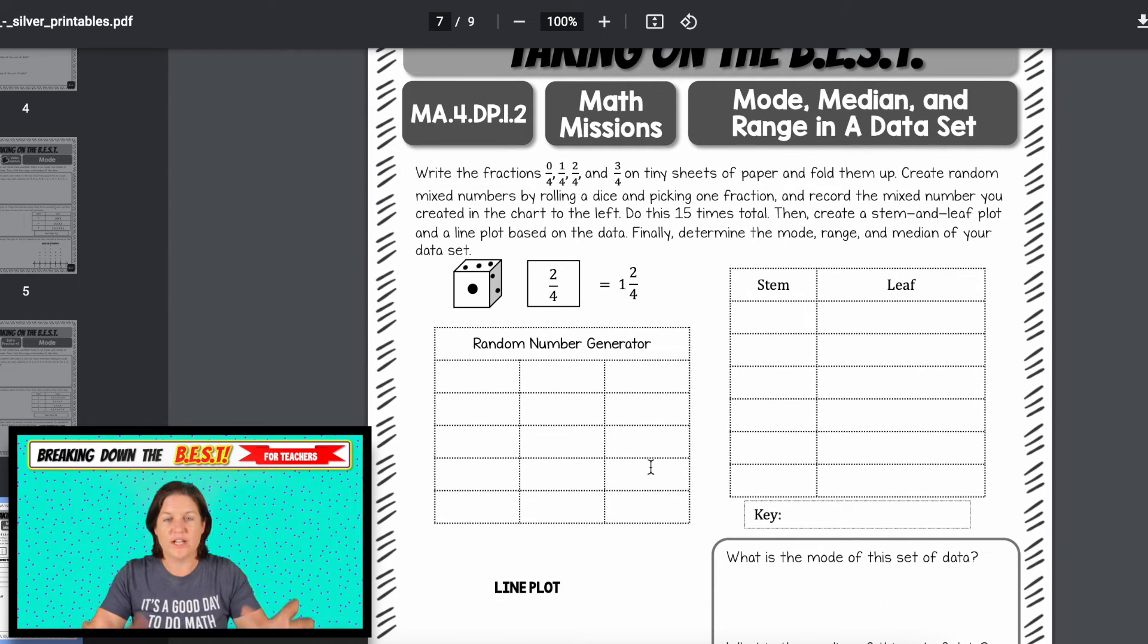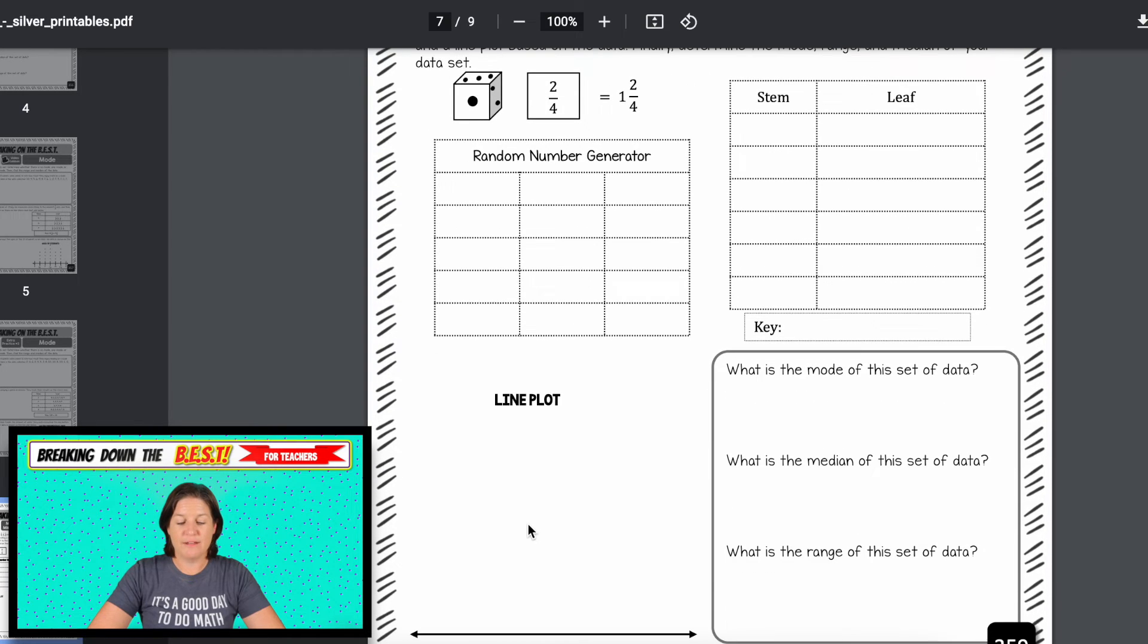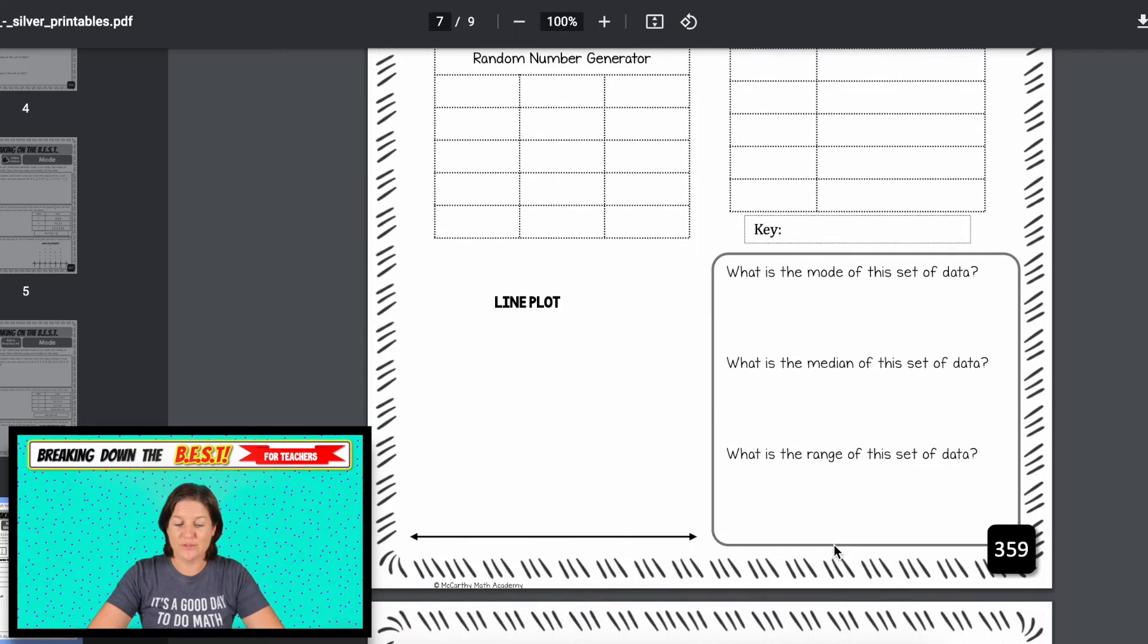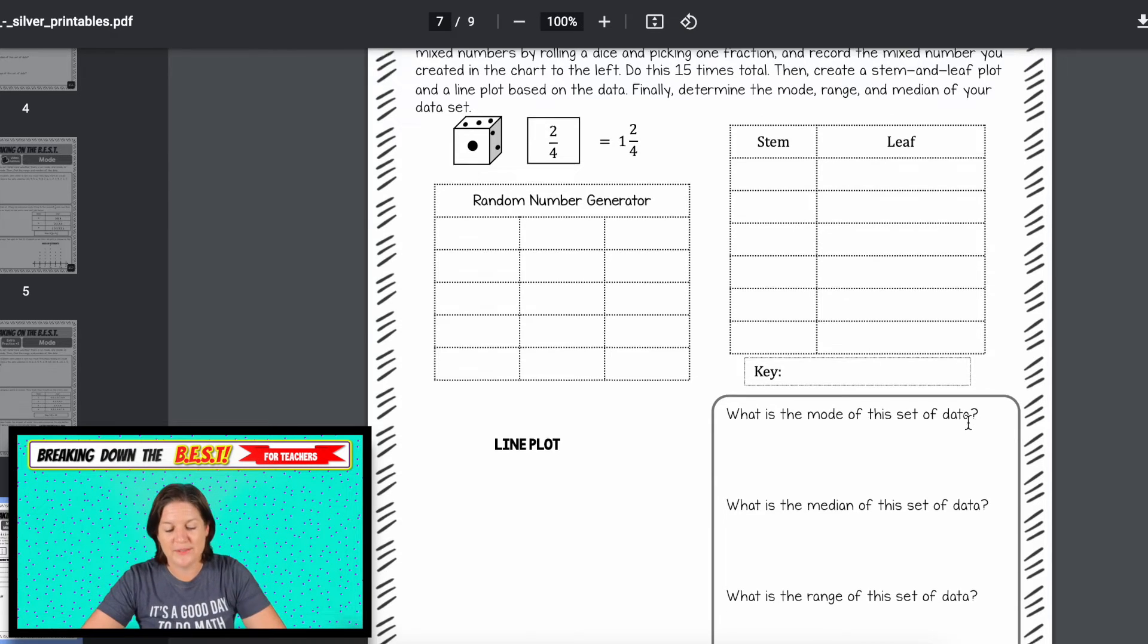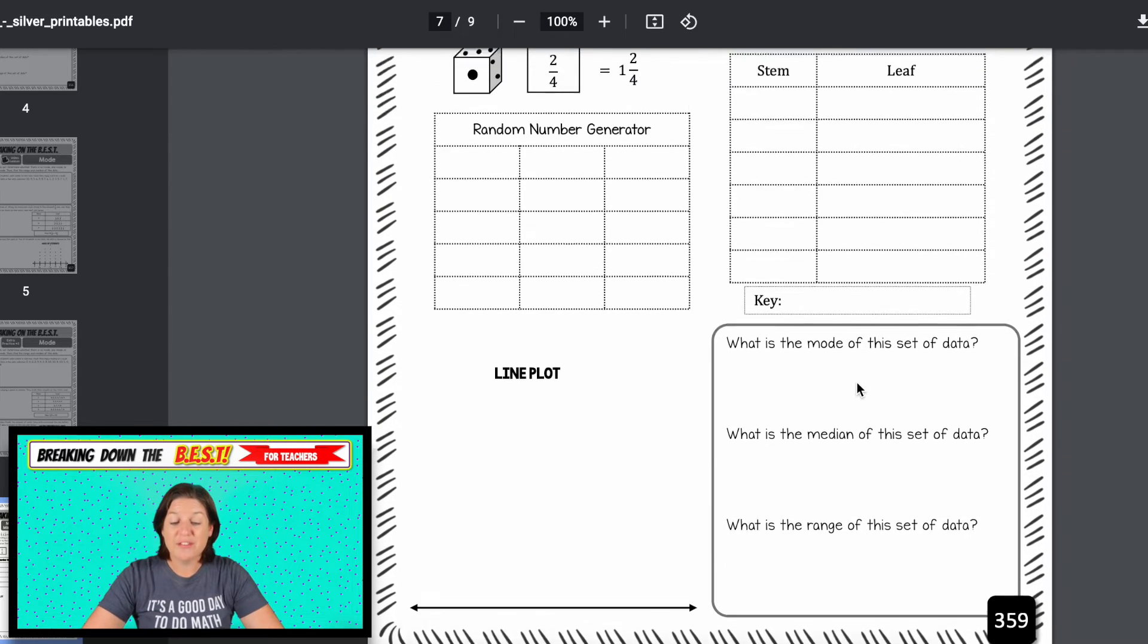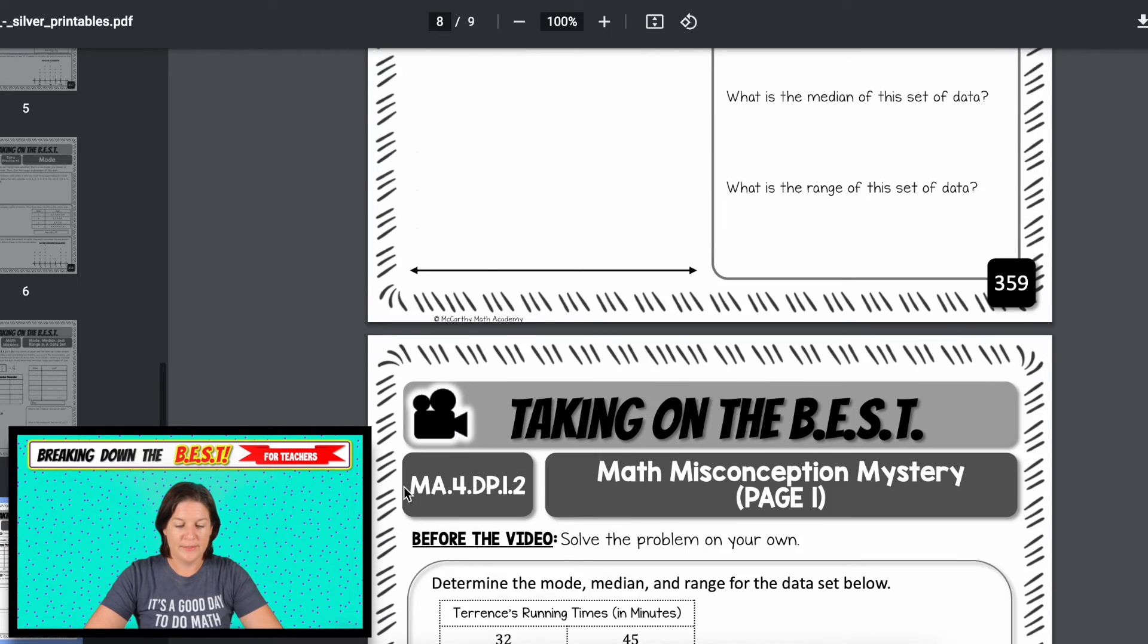Then we have a math mission to follow, which combines everything to an activity at the end. Directions say to write the fractions zero fourth, one fourth, two fourths, and three fourths on tiny sheets of paper and fold them up. Create random mixed numbers by rolling a number cube and picking up one of the fractions and record that as a mixed number. Let's do this 15 times. Then we'll create a stem and leaf plot and a line plot based on the data. And finally determine the mode, the median and the range of the data. So this is all going to be generated by you. So everybody's work might look different.